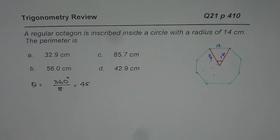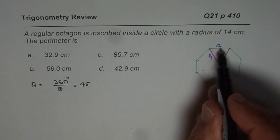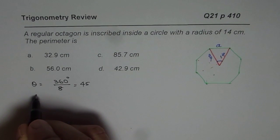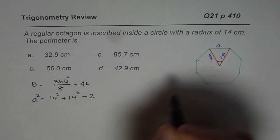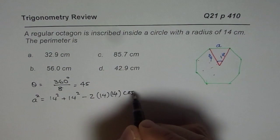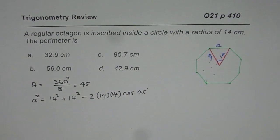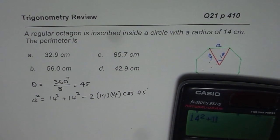Now you can do a couple of things. Since you know this is 45 degrees, you can use the cosine law to find side A. So A squared will be equals to 14 squared plus 14 squared minus 2 times 14 times 14 times cosine of 45 degrees.